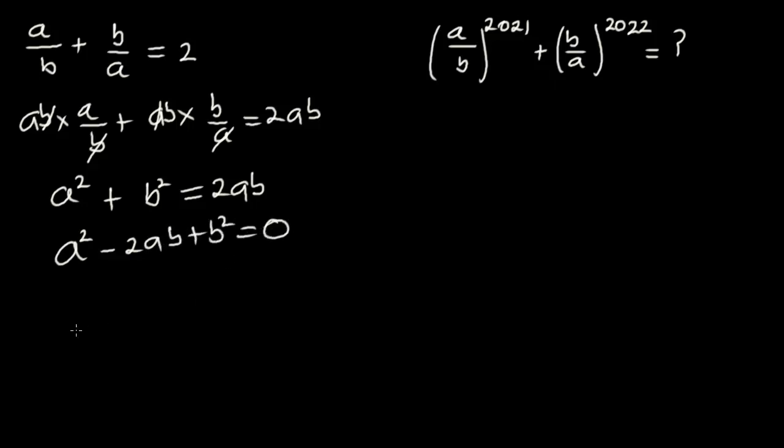And from here we can write the left hand side as (a minus b) squared. When we expand this, you get what is over here. You can try that and let me know your answer in the comment section. So this will be equal to zero.